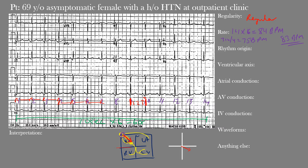Because the sinus node is up in the right atrium, conduction heads in a downward-leftward direction. The normal P-wave axis is between 0 and positive 75 degrees. We want leads heading in that direction to have upright P waves. At 0 degrees sits lead I; at positive 60 degrees is lead II's positive end; at positive 90 degrees is aVF. Leads V4, V5, and V6 are also oriented in this direction in the horizontal plane. aVR is oriented opposite, so we'd expect a negative or inverted P wave there.